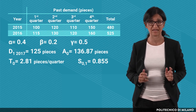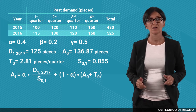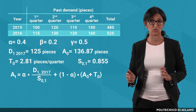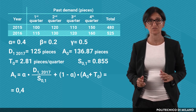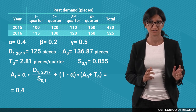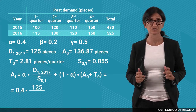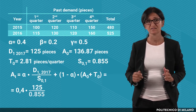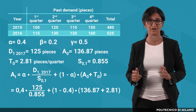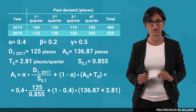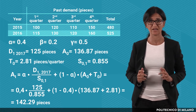In order to forecast the demand in the second quarter, we need to update the average and the trend. Let's start with the average, using the smoothing coefficient alpha equal to 0.4. The value of the average in the first quarter of 2017 is obtained from the weighted average between the actual demand in Q1 2017 — that is 125 — divided by the seasonality factor of the first quarter computed in the initialization phase, 0.855, and the sum of the previous average A0 = 136.87 and the trend T0 = 2.81. Therefore, the updated value of the average is equal to 142.29 pcs.